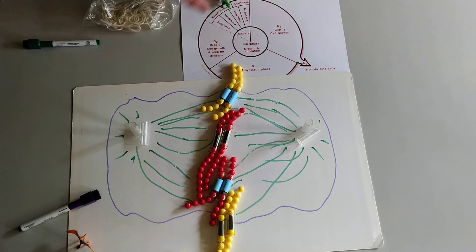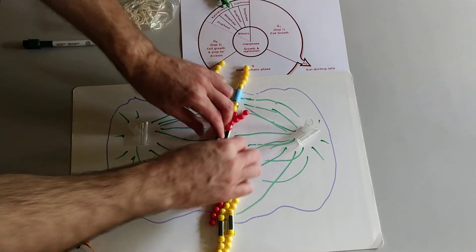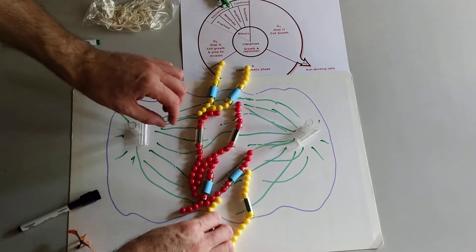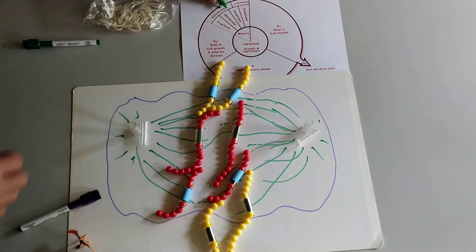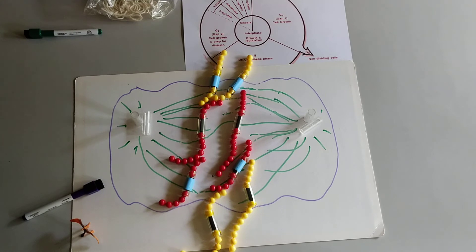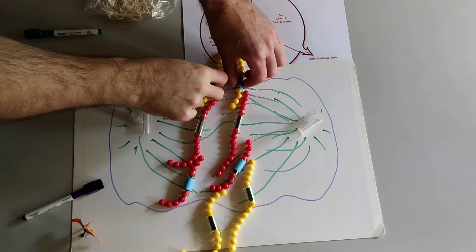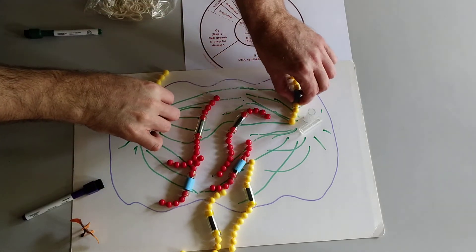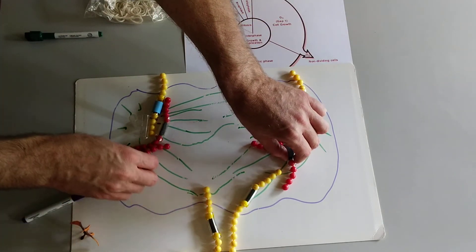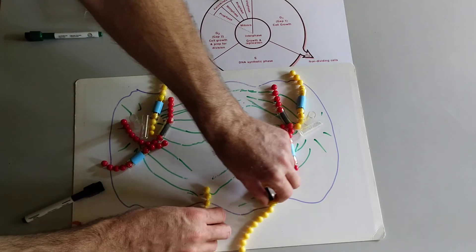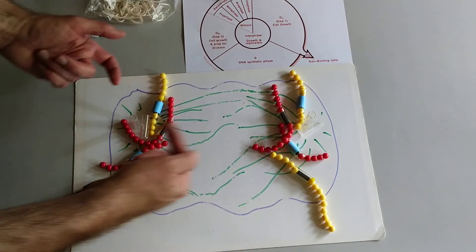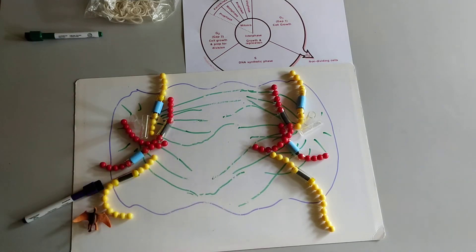So as soon as the centromeres break, we are now in anaphase. So anaphase, the chromatids move in opposite directions. The microtubules that make up the spindle fibers shorten until the chromosomes are pulled to these opposite poles of the cell.